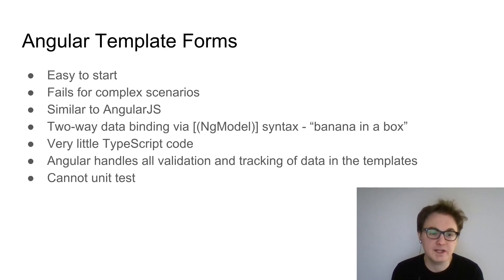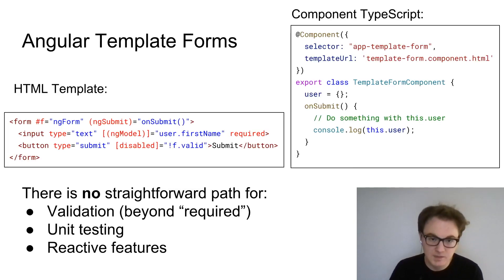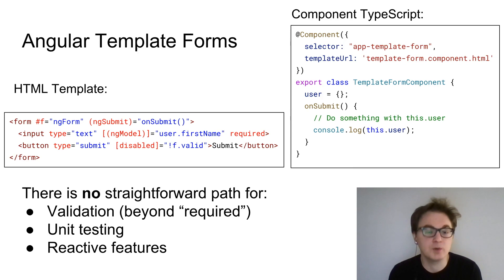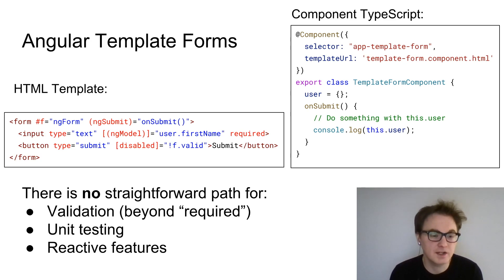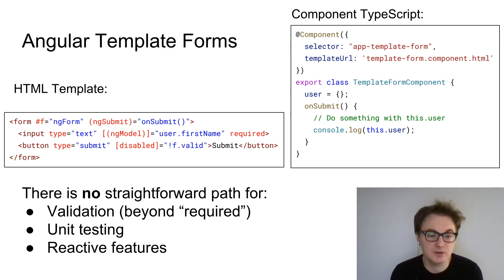Another downside is that you can't really unit test template forms because there's no model in the TypeScript. This is example code for creating a template form — the first and last time I'll show template form code in this talk. On the left we have the template HTML, with an actual HTML form element. We assign an Angular template variable called f with hashtag f equals ng-form, which allows us to refer to the form in the template. We also have a method call whenever the form is submitted.